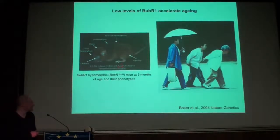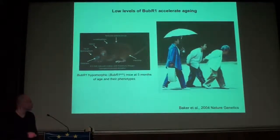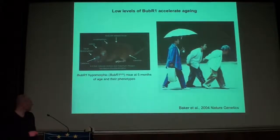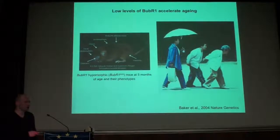These mice have a four to five-fold reduced median and maximum lifespan. They have profound sarcopenia, bilateral cataracts, lordokyphosis — which is the rear curvature of the back — and reduced adipose tissue. These phenotypes are also seen in humans as they age.